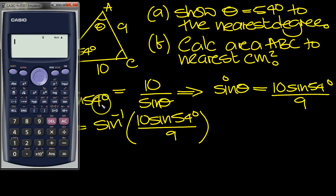So let's work that out on the calculator. So it's shift sine, make sure we're in degrees mode, of 10 times sine 54, close that bracket, divide by 9, close the shift sine bracket.